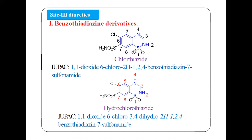At position 1 we have 2 oxygen atoms, so we say 1,1-dioxide (or dioxo). At position 6 there is chloro. At position 2 there is hydrogen (written as 2H). The heterocyclic ring has sulfur at position 1, nitrogen at position 2, and nitrogen at position 4 — making it a 1,2,4-benzothiadiazine. At position 7 there is a sulfonamide, giving us the name: 6-chloro-2H-1,2,4-benzothiadiazine-7-sulfonamide-1,1-dioxide, also called chlorothiazide.